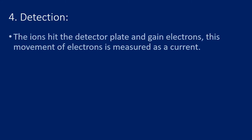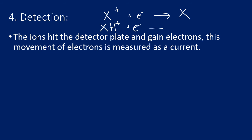Once the particles hit the detector, they gain electrons — remember these particles are positively charged. For electron impact ionization, X⁺ hits the detector and becomes neutral X again; for electrospray, XH⁺ gains an electron to become XH. This gain of electrons is a movement of electrons from the plate to the sample, which constitutes a current, and that current can be measured.